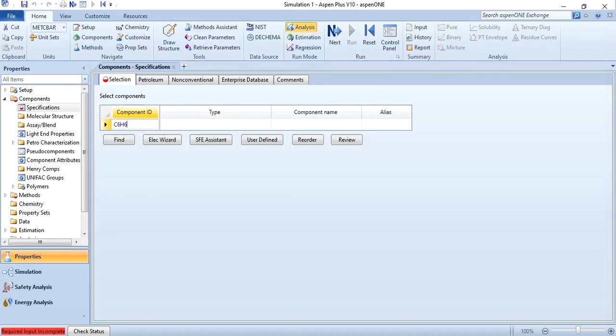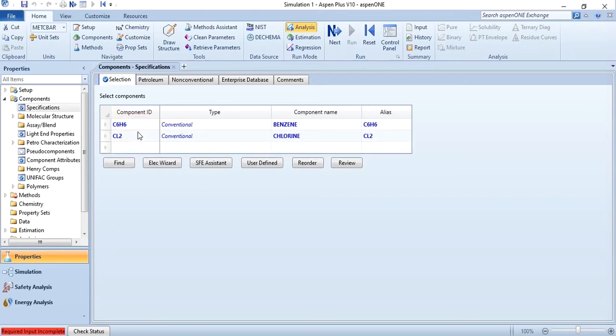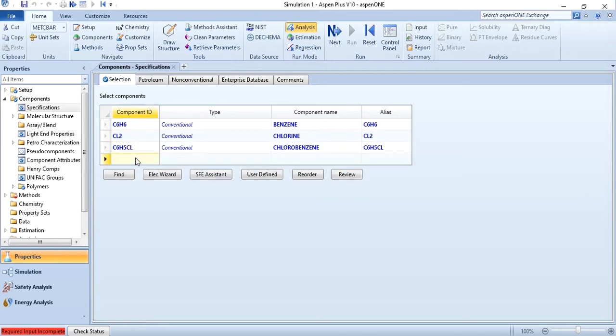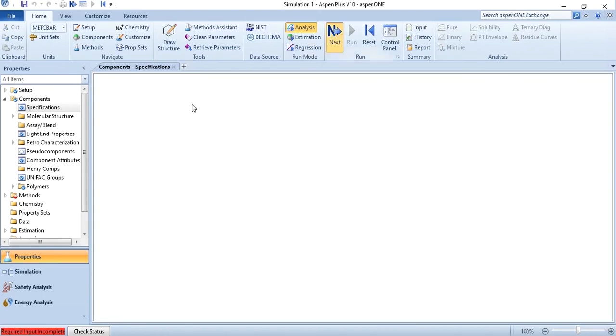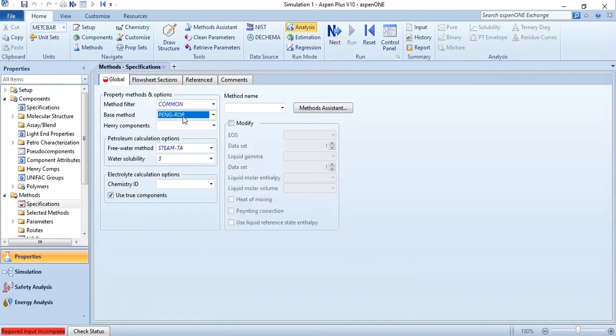So I will add here C6H6 for benzene, Cl2 for chlorine, C6H5Cl for chlorobenzene, and HCl for hydrogen chloride. Click next, and then we will select Peng-Robinson over here and then click run.